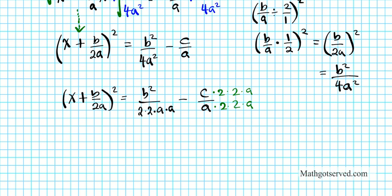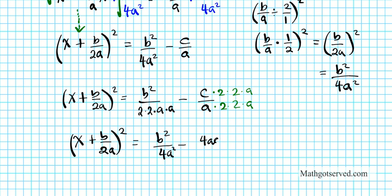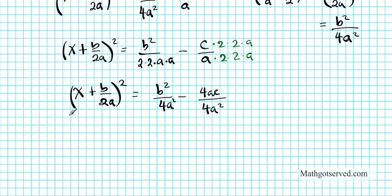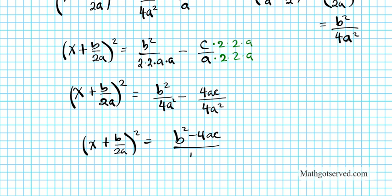Now putting everything back together, we are going to have x plus b over 2a on the left side, nicely factored. On the right side I am going to have b squared over 4a squared minus 4ac over 4a squared. Now the denominators are the same on the right side, so we combine them: x plus b over 2a, all squared, equals b squared minus 4ac on the numerator divided by 4a squared.